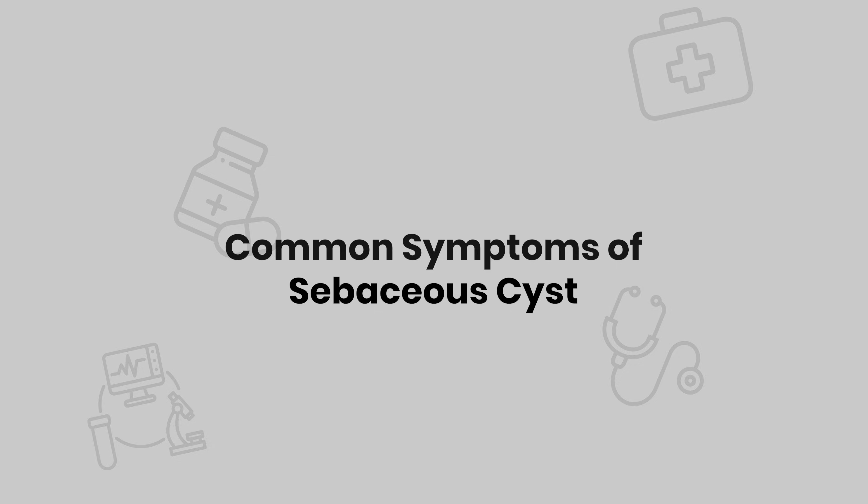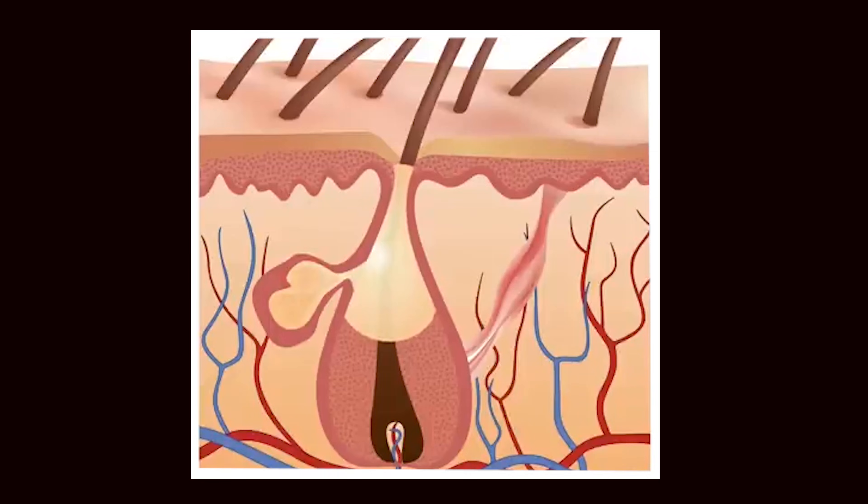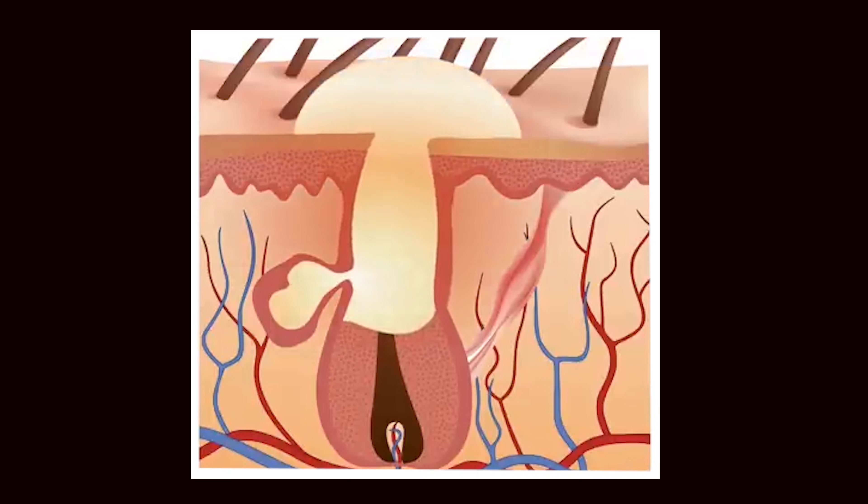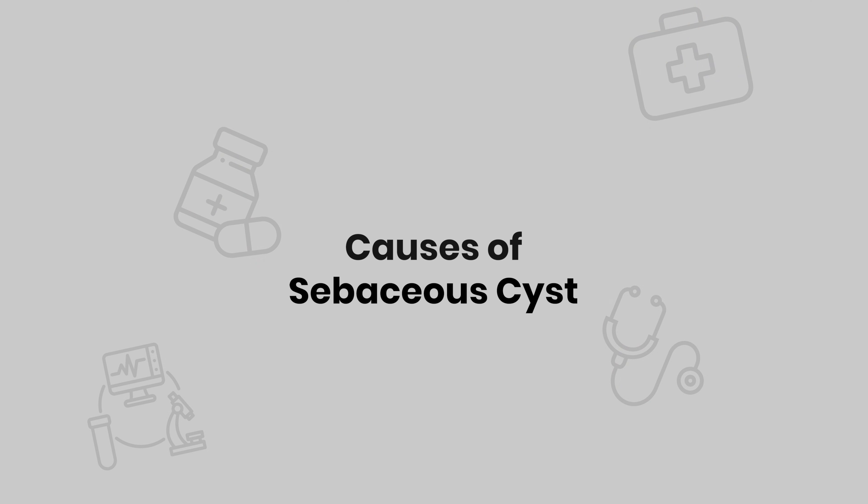Sebaceous cysts are most commonly seen on the face, scalp, neck, and back. The common symptoms include a small round lump under the skin that may be skin-colored, whitish, or yellowish. The lump is usually painless, but it may become tender or painful when infected. If the cyst ruptures, a yellowish, cheesy, waxy material may drain out, which is pretty bad smelling.